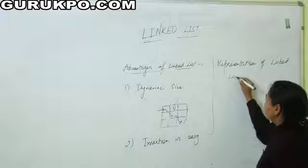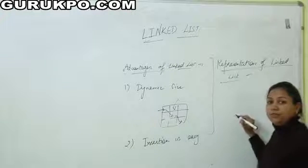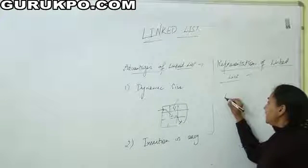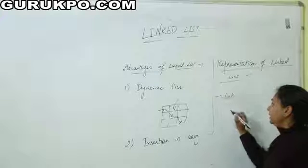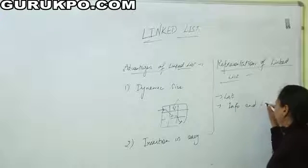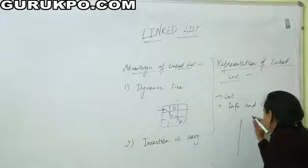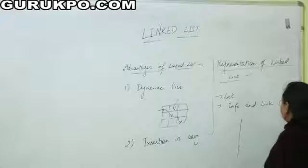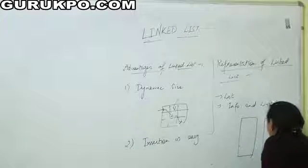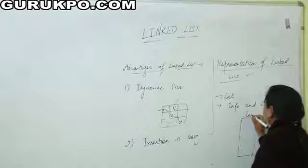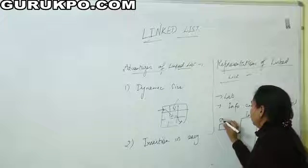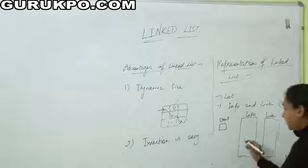The next topic is representation of linked list in memory. To represent the linked list, let us take a linked list. Suppose we have a list and we have two arrays: info and link. These are our arrays — info and link. Start stores the location of the first element.